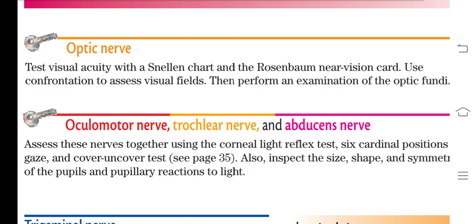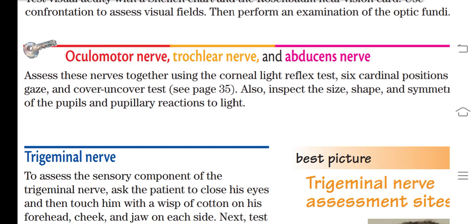Oculomotor, trochlear, and abducent — these three cranial nerves are assessed together using the corneal light reflex test and the six cardinal positions of gaze, which are also used in eye assessment. Refer to page 35 for more detail on these tests.